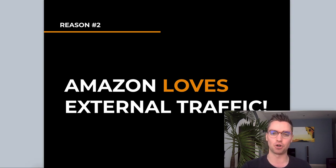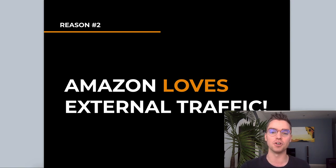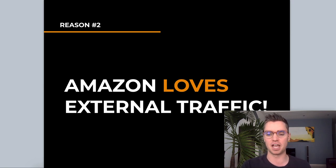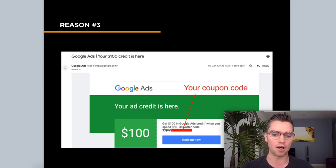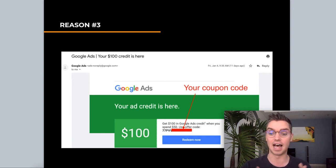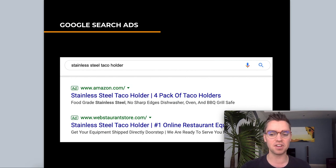Reason number two: Amazon loves external traffic. Amazon loves to pull traffic from other sources — whether that's Google, Pinterest, YouTube, Instagram, Facebook. This can really help you, especially if you're ranking your products or maintaining or increasing keyword rank for existing products on Amazon. Reason number three: when you sign up for Google, there's a good chance you'll get a free ad credit. For example, you spend a hundred dollars and get a hundred dollars in ad credit — basically results for half the price. Those are the top three reasons. I'm specifically covering Google search ads in this video.